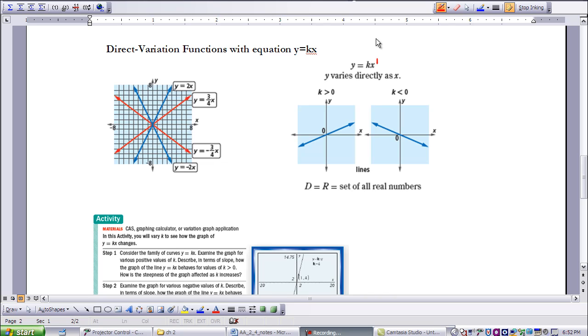So y equals kx, said in words, y varies directly as x. We look at our graphs here, and they're graphs of a line. So a direct variation to the power of 1 is a graph of a line. Notice the lines are going through the origin of 0, 0, right here.